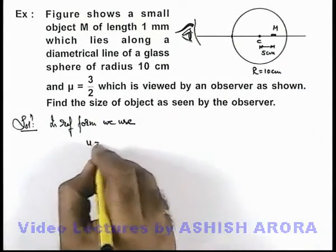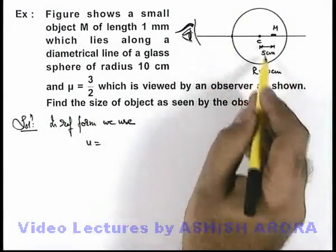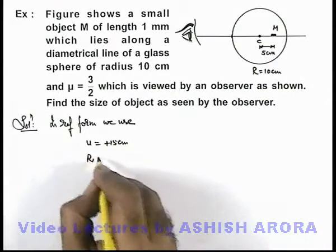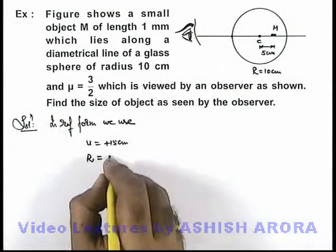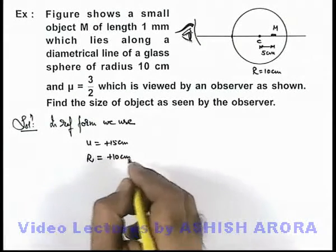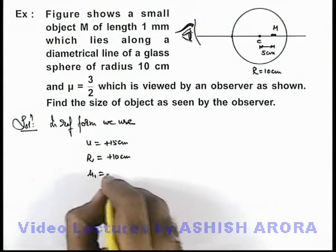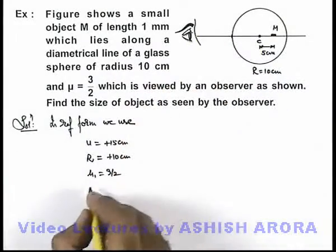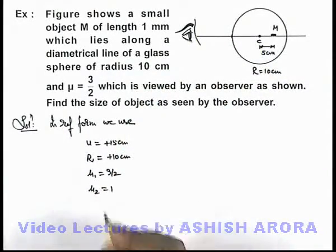Here we can use the distance of object from the surface is +15 centimeter. Radius of curvature for the surface can be taken as +10 centimeter. Here μ₁ we can use as 3/2 as light is going from glass sphere to air, and μ₂ we can take as 1.